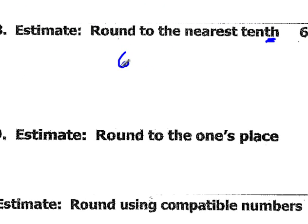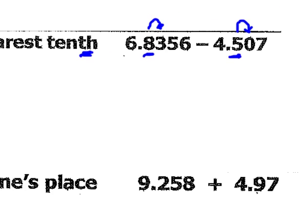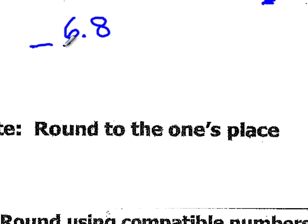So I've got 6.8. I go to the next number, it's 4.5. I go to the tenth place, there's a 5. I look next door to the right, there's a 0. 0 is less than 5, so I don't round up. So this problem is going to be 6.8 minus 4.5.